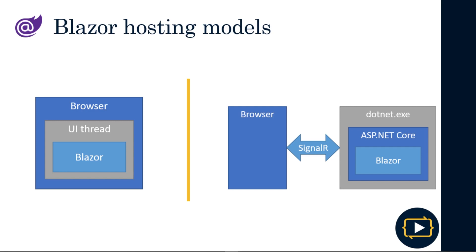Blazor is a web framework that comes in two versions to choose from — two ways in which it can be executed. The first way is to be executed on the client side in the web browser, in a .NET runtime environment based on something called WebAssembly. The second way is to be executed on the server side in ASP.NET Core. Regardless of the hosting model, the application models and components are exactly the same. Next, we'll talk about these hosting models in a little more detail.